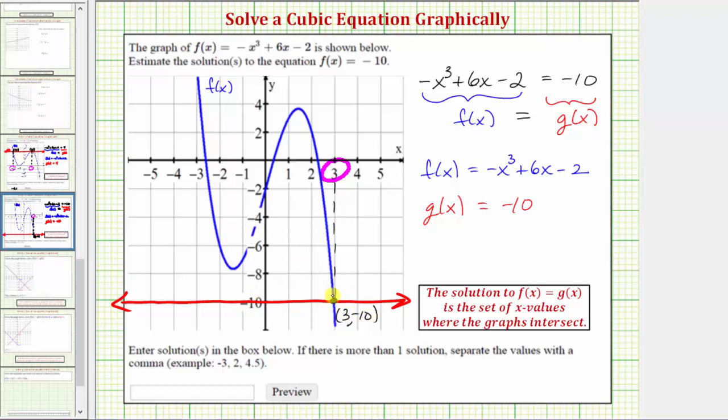Notice because this is the point of intersection, when x equals 3, we know both f(x) and g(x) equal negative 10.